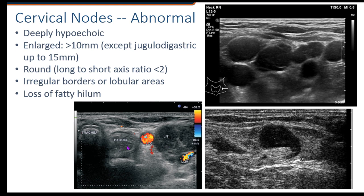Of note, if there is a papillary cancer in the thyroid, it has been found that pretty often a lymph node will have cystic components to it. Those cystic components, when they look at these lymph nodes under histology, are often indicative of papillary cancer.